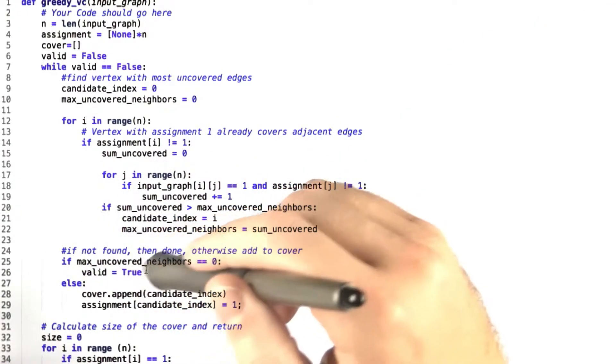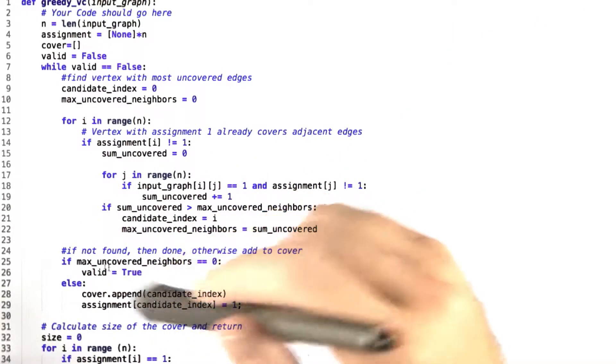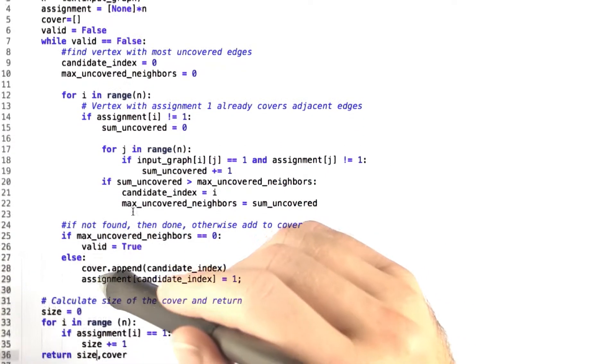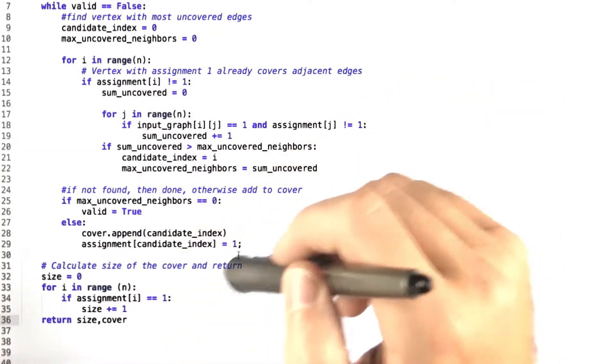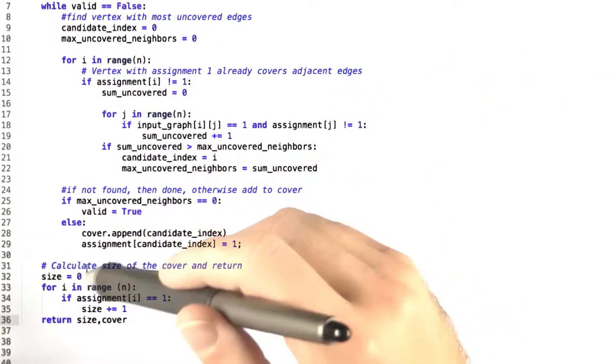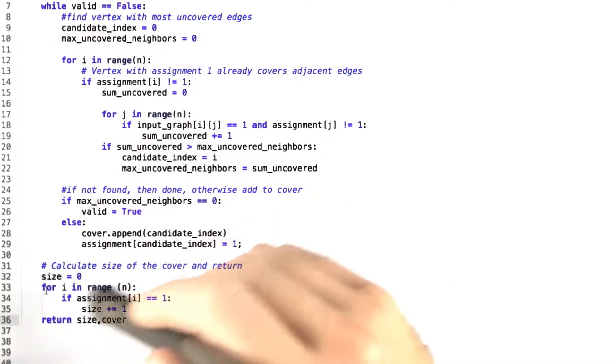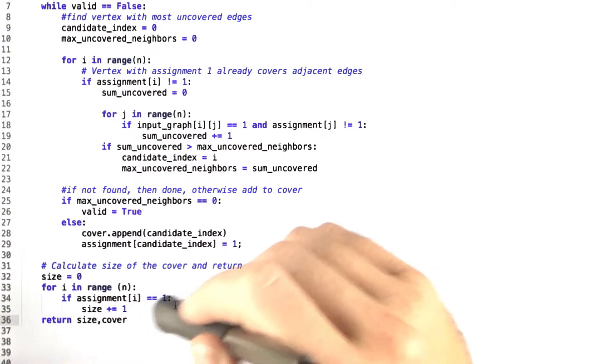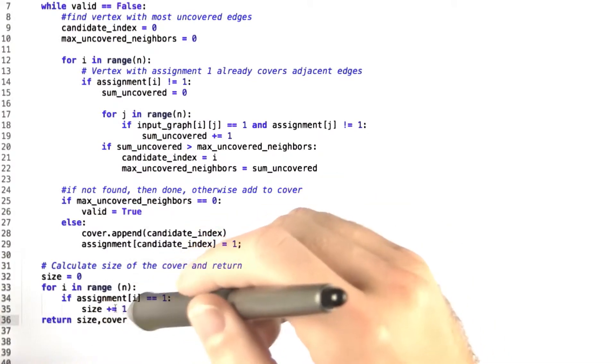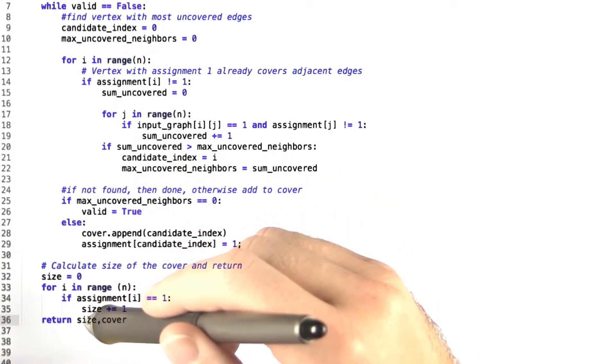Once we eventually fall through, that is once we eventually hit valid equal true here and fall out of this while loop, we go down here and calculate the size of the cover and return. So size equals 0 and then for every vertex in the graph, we check if it is currently in the assignment. And if so, we increment size and then we return size and cover.